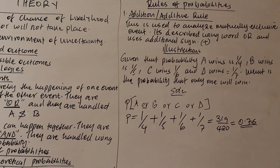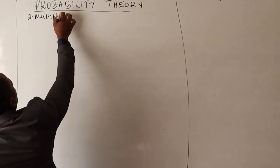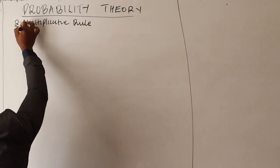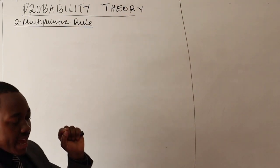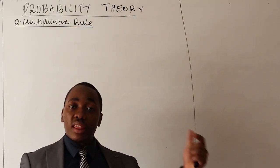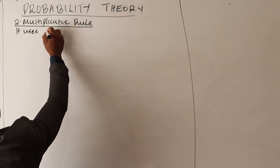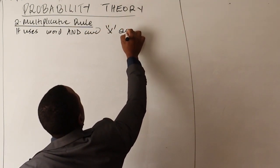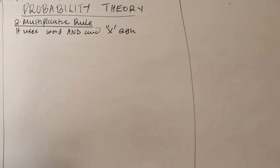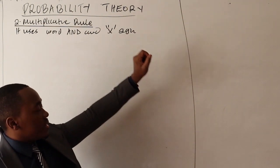The second rule is the multiplicative rule. The multiplicative rule is used to handle or evaluate independent events — where the happening of one does not prohibit the happening of the other, meaning the events can happen together. It uses the word 'and' and the multiplication sign.